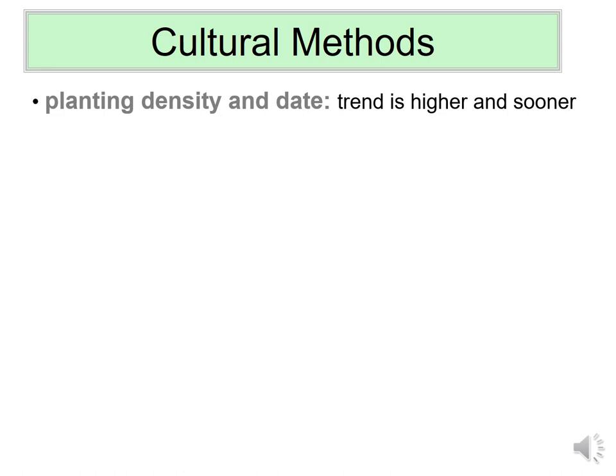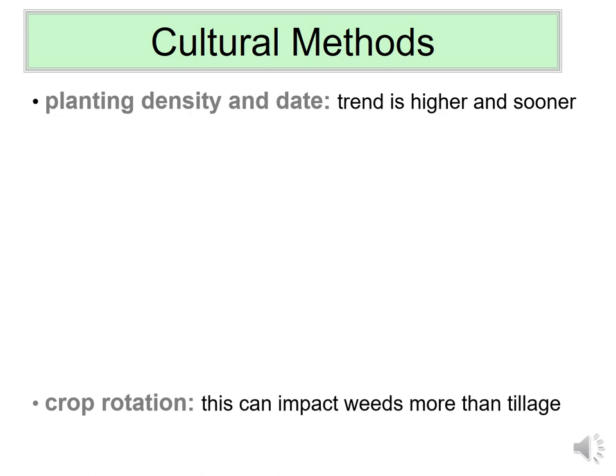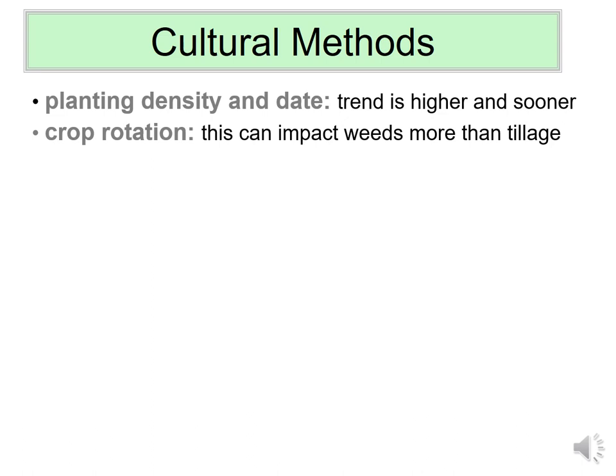Some cultural methods include planting density and date. The trend has been toward higher densities — more plants per given area — and planting sooner. This essentially gets the crop plant to resources first, which as previously discussed explains most of the competitive advantage. We'll talk more about that later.